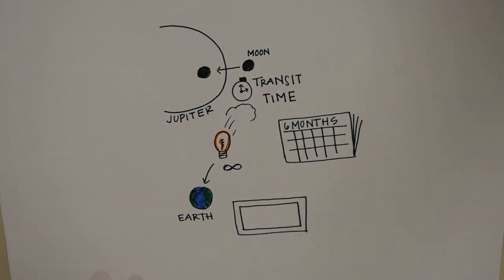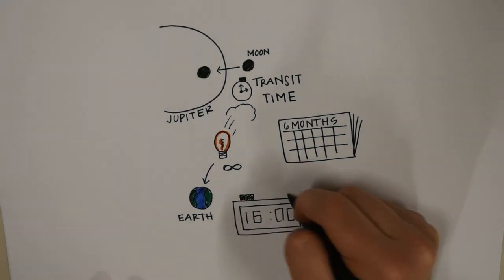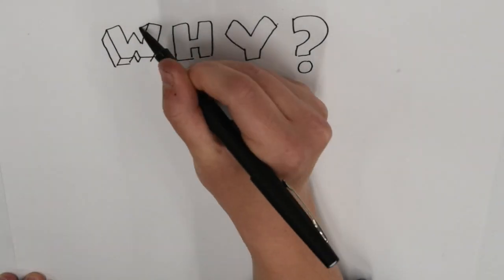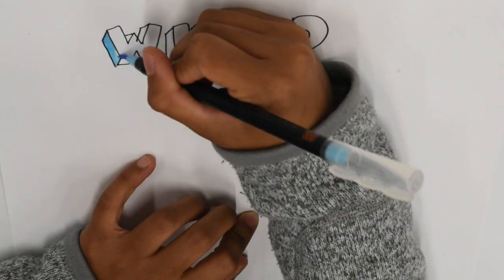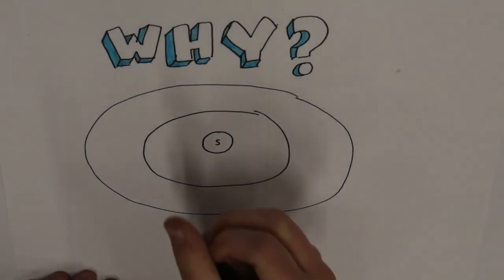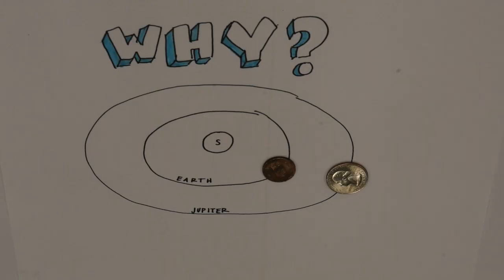So, Rømer waited for this transit and found that the moon actually transited about 16 minutes later than what he predicted. Why? In six months, the Earth had moved farther away from Jupiter in its orbit, increasing the distance between them and therefore the distance that light from the transit had to travel.